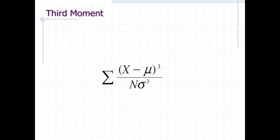Remember, uppercase sigma represents summation, x represents an individual raw score, mu represents the population mean, and lowercase sigma represents the standard deviation.